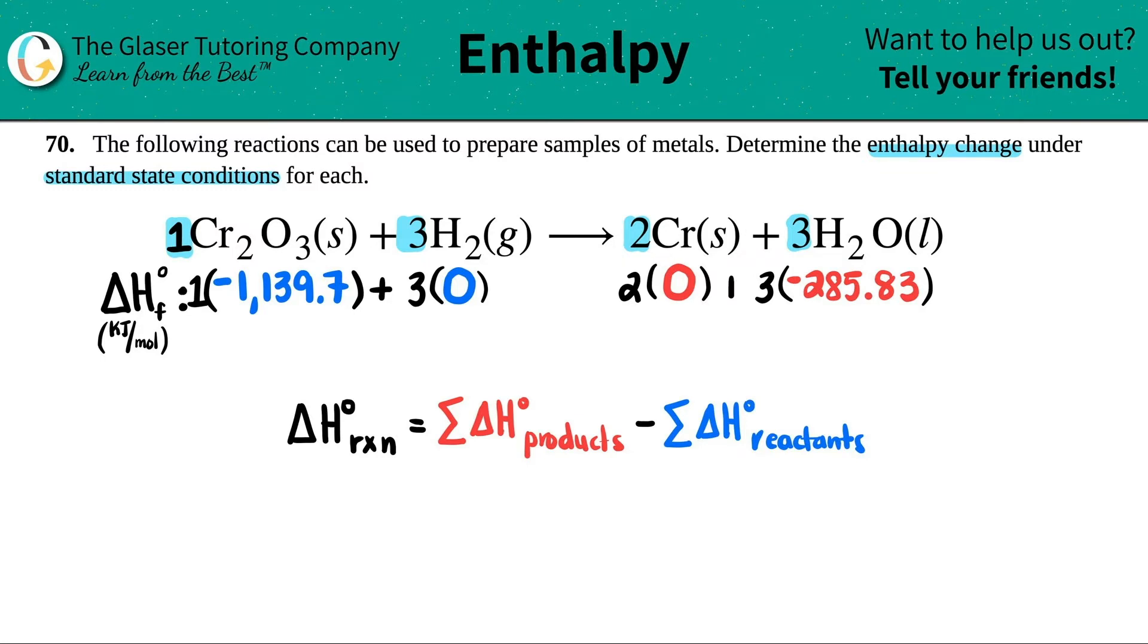For the reactant side, it's just going to be negative 1139.7. And then for the product side, I just have to do three times this negative 285.83. Three times negative 285.83, so I get negative 857.49. Now I'm ready to rock and roll. I have two numbers, so I'm ready to use my formula.